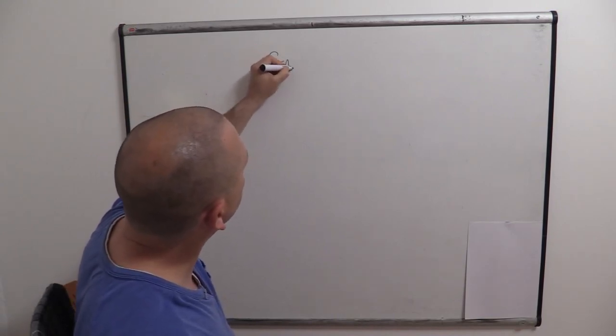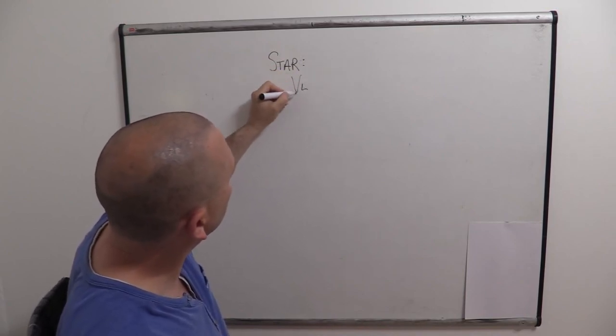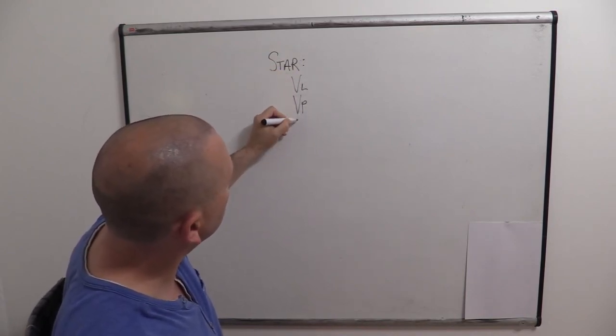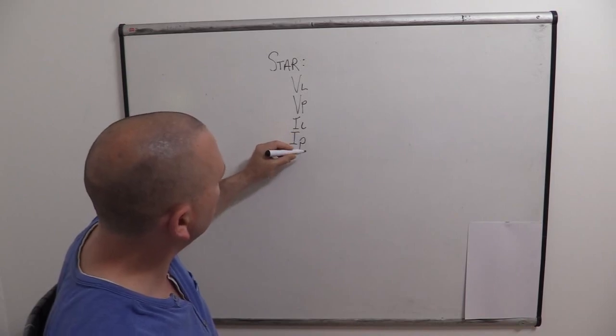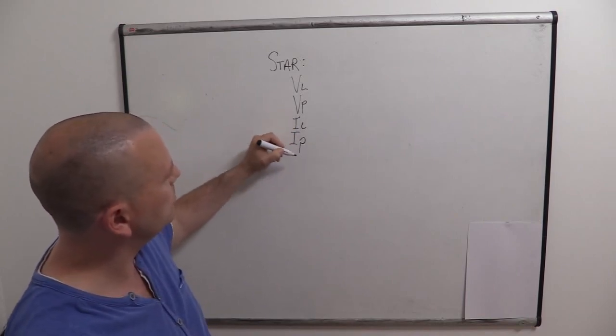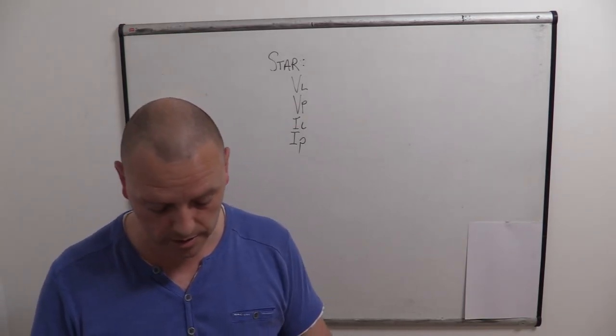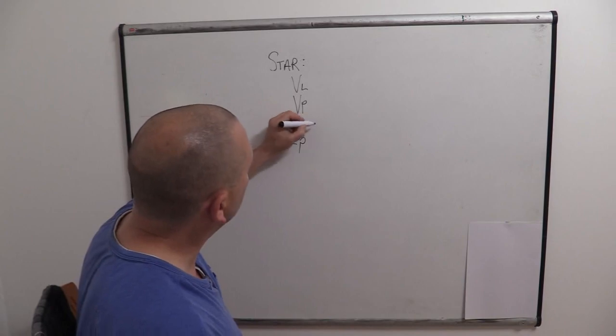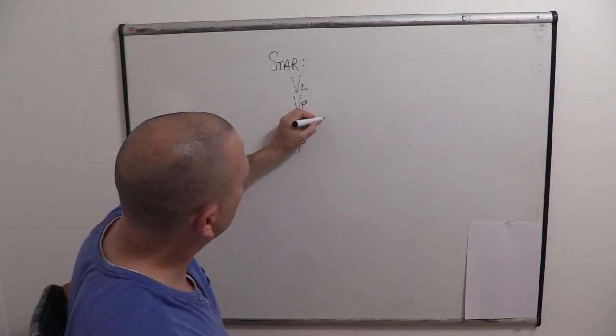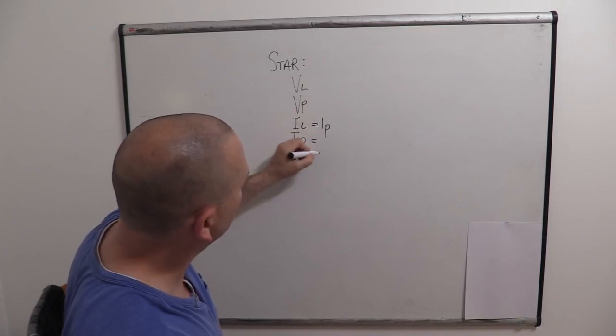So, star, star there. So we've got line voltage, phase voltage, line current. I'm going to separate phase current, but actually this is going to be the same. In a star system, there's sort of nowhere else for the current to go really, and that's why they're going to be the same. So that straight away is going to equal IP, and that is going to equal IL.